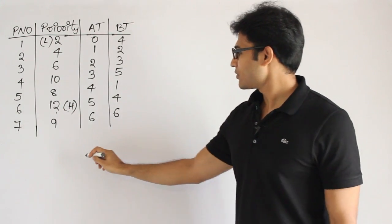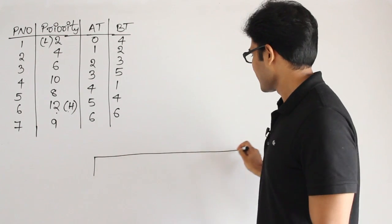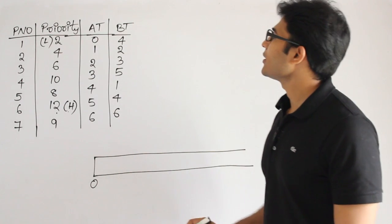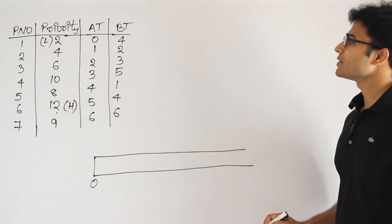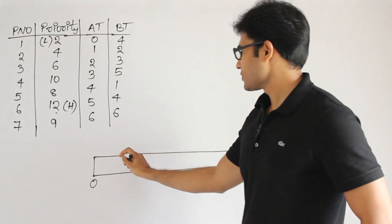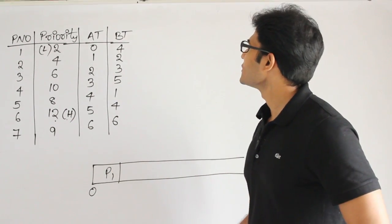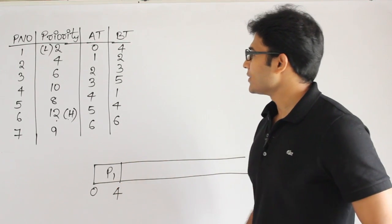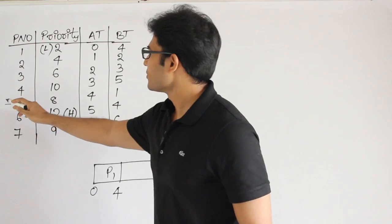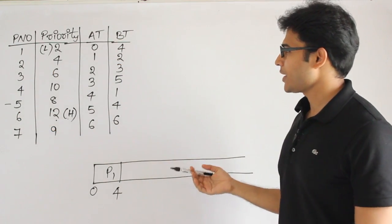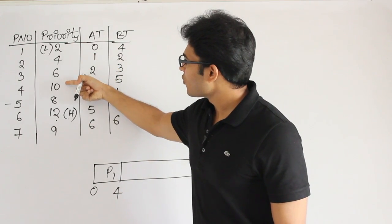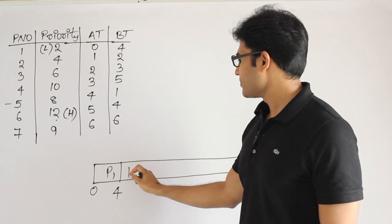We start at time 0. At time 0, P1 has arrived with priority 2 and there is no other option, so only one process is available — we schedule P1, and it finishes at time 4. By time 4, all processes P2, P3, P4, P5 are available. Among these, we take the one with the highest priority. Since higher number means higher priority, the highest among them is P4 with priority 4, so we schedule P4 next.